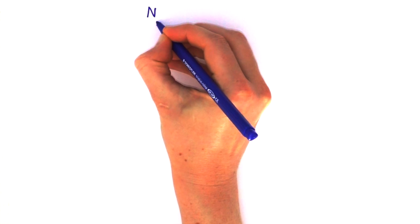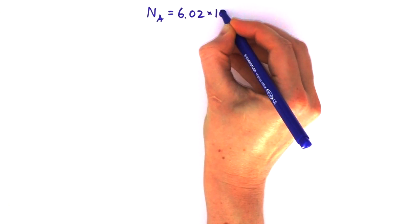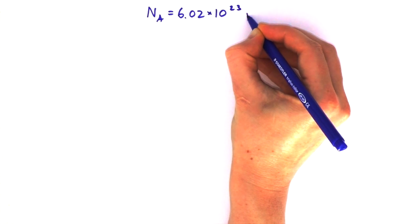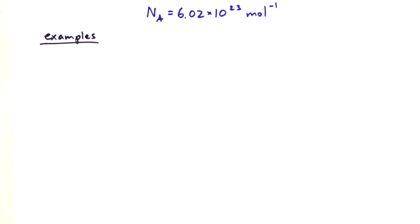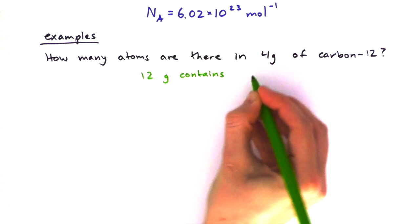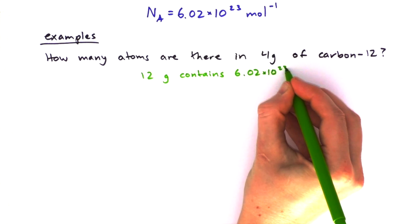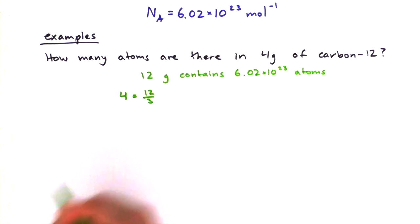Let's write down that number again. Avogadro's constant is 6.02 times 10 to the power 23 per mole. First example: How many atoms are there in 4 grams of carbon-12? We already know that 12 grams contains 6.02 times 10 to the power 23 atoms.